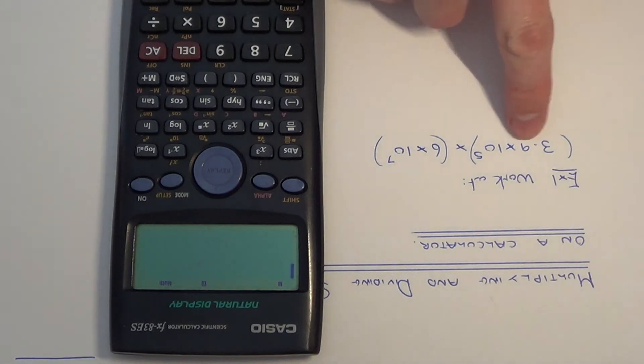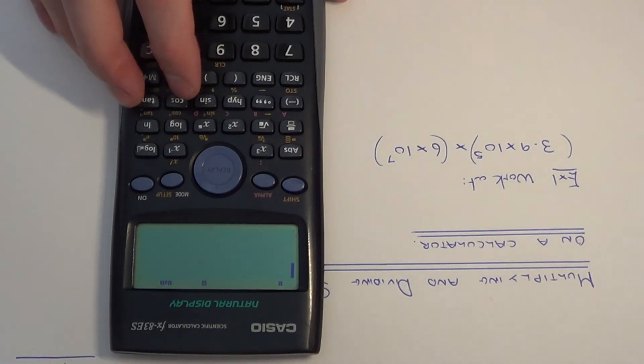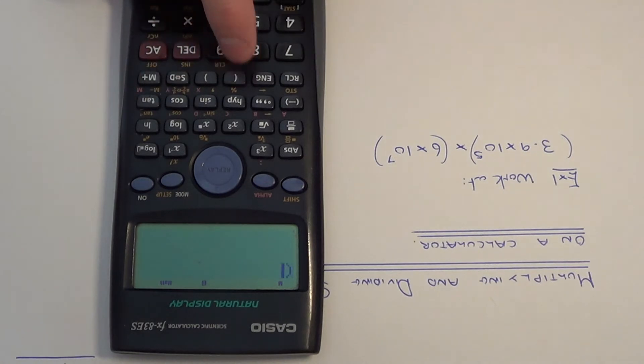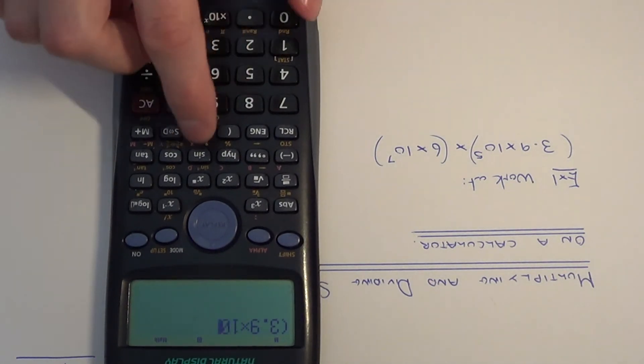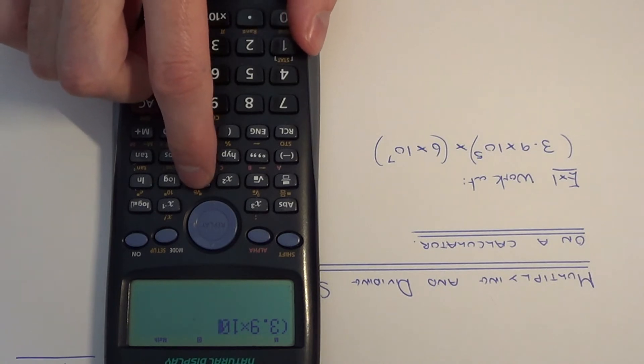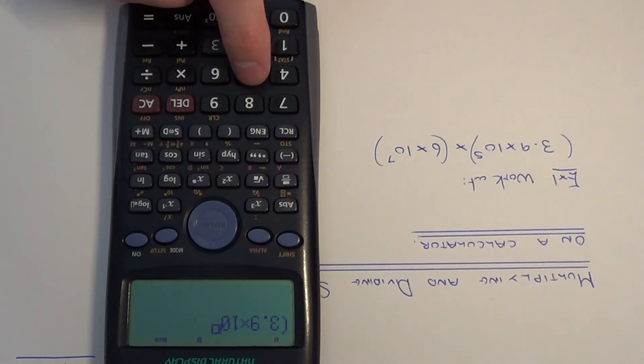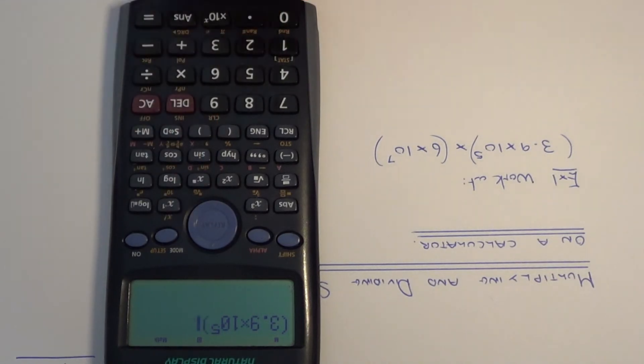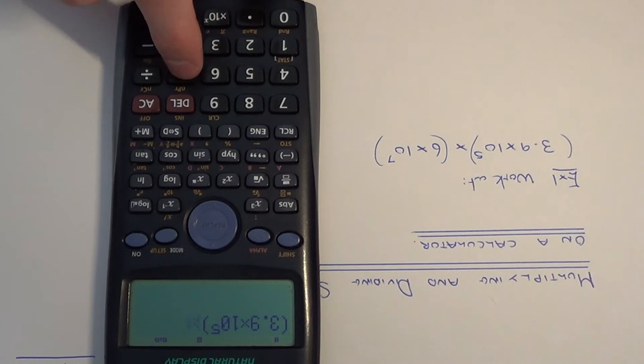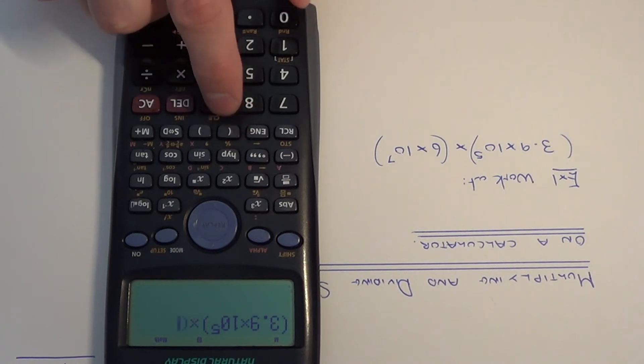So let's work out example 1. We have 3.9 times 10 to the power 5, and we can put this in brackets using the bracket keys. Hit the power button here, so it's power 5, hit to the right to get the bracket on the next line, and then we have times 6 times 10 to the power 7.